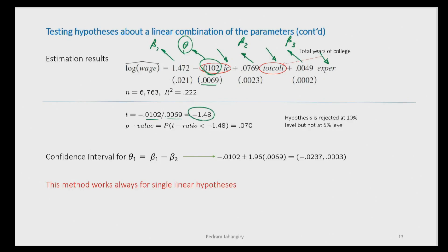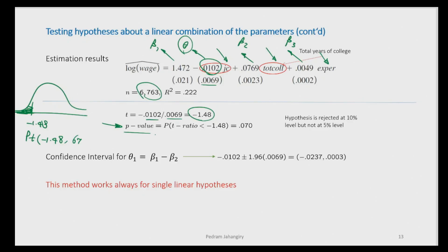The t-value looks small — about -1.48. I prefer the p-value approach over comparing to critical values because it gives the exact significance level at which we can reject the null. To get the p-value, we calculate P(T ≤ -1.48). With approximately 6,760 observations and 3 explanatory variables, degrees of freedom is roughly 6760 - 4 = 6756. Computing this gives a p-value of about 0.07, and since it's a one-tailed test we don't multiply by 2.